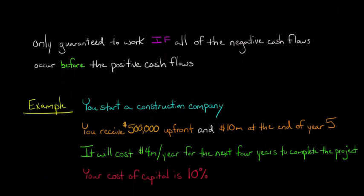So let's take an example where you start a construction company and you're accepting your very first project. And for this project, you're going to receive $500,000 upfront, right, so we'll call that year zero. So right upfront, you're going to get 500 grand. And then at the end of year five is your second and final payment of $10 million. So I guess you can think of the $500,000 as like a deposit or something and then you get paid the $10 million at the end, at the end of year five.